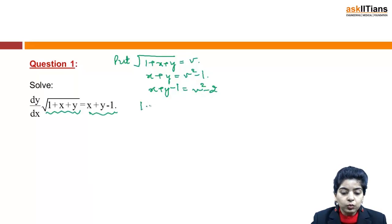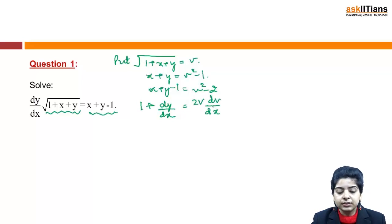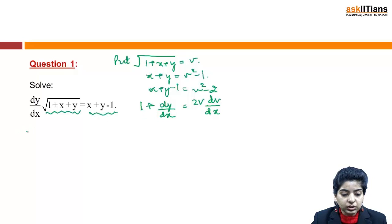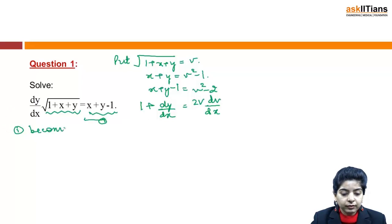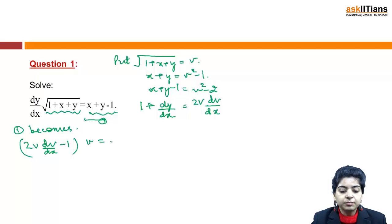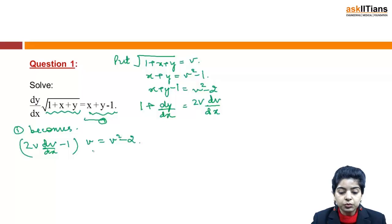Differentiating, 1 + dy/dx = 2v · dv/dx, so dy/dx = 2v · dv/dx - 1. Substituting into the original equation: (2v · dv/dx - 1) · v = v² - 2, where √(1 + x + y) = v and x + y - 1 = v² - 2. This simplifies to 2v · dv/dx - v = v² - 2.